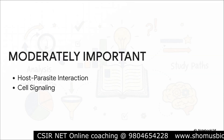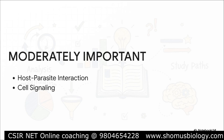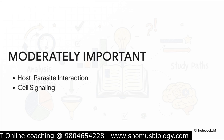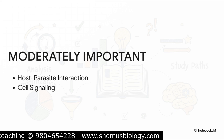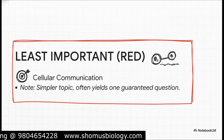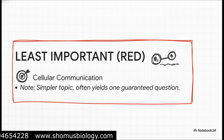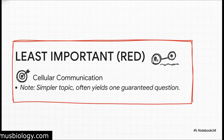Next, we've got our blue topics — these are your moderately important subjects: host-pathogen interaction and cell signaling. They definitely show up on the exam, but not with the same consistency as the green topics. Think of these as secondary targets — a fantastic way to scoop up extra marks once you've nailed down your foundation in the green areas. And finally, our red topic — cellular communication. Least important does not mean useless. While it has the fewest questions, the topic itself is actually pretty simple, often just a single chapter that can give you one guaranteed easy question. Don't dismiss it — this could be the most strategic, low-effort point you score.